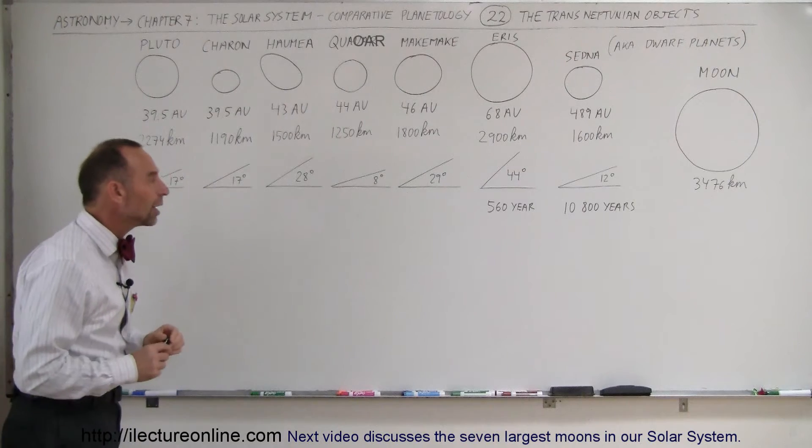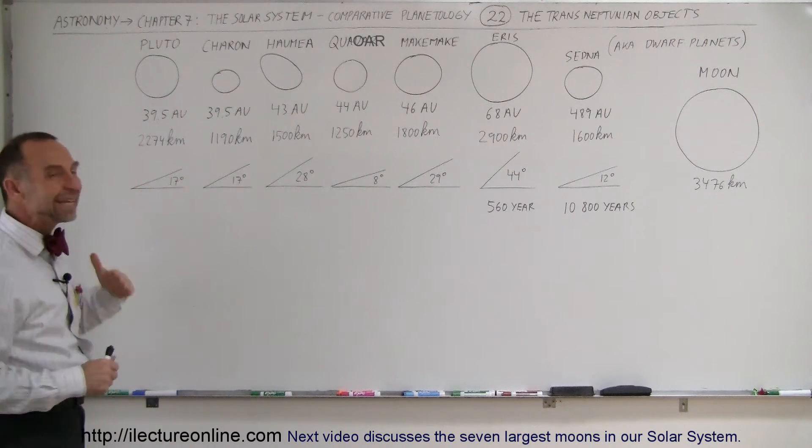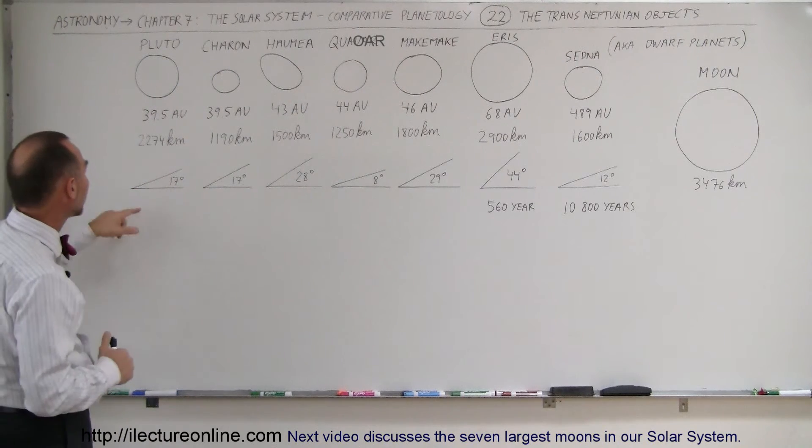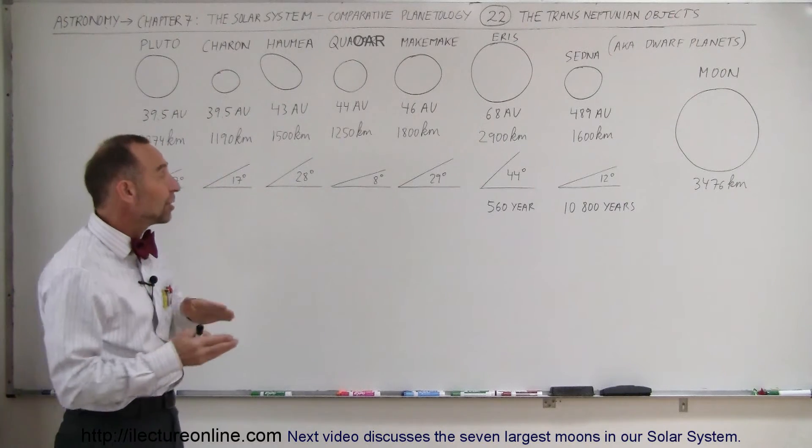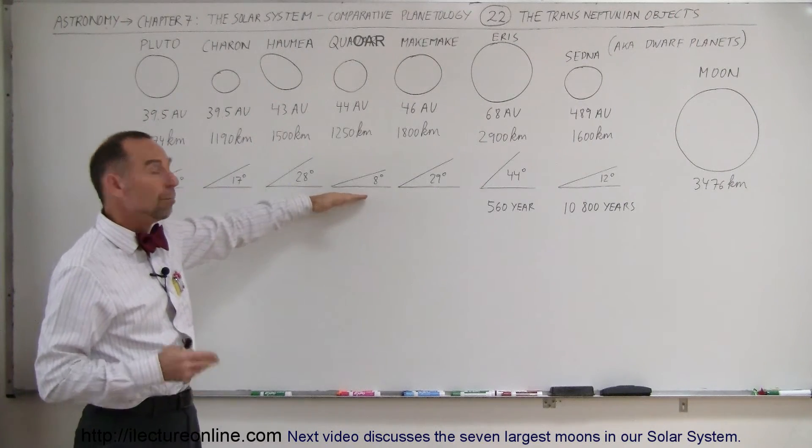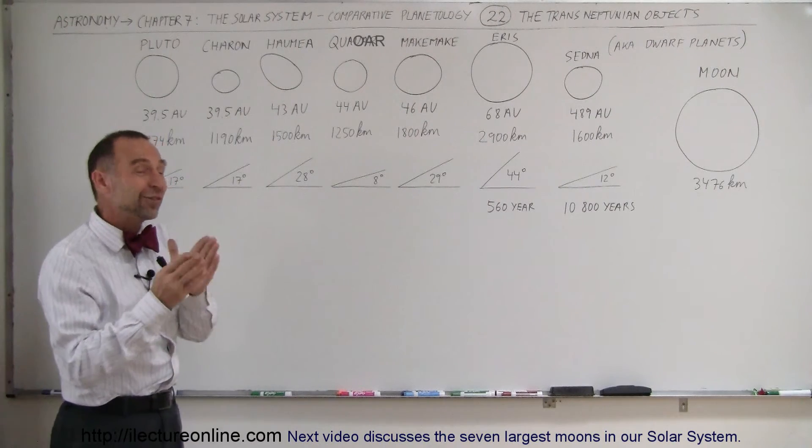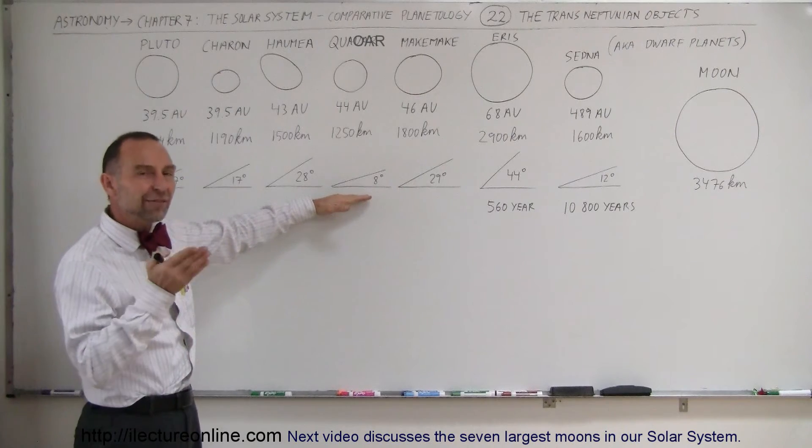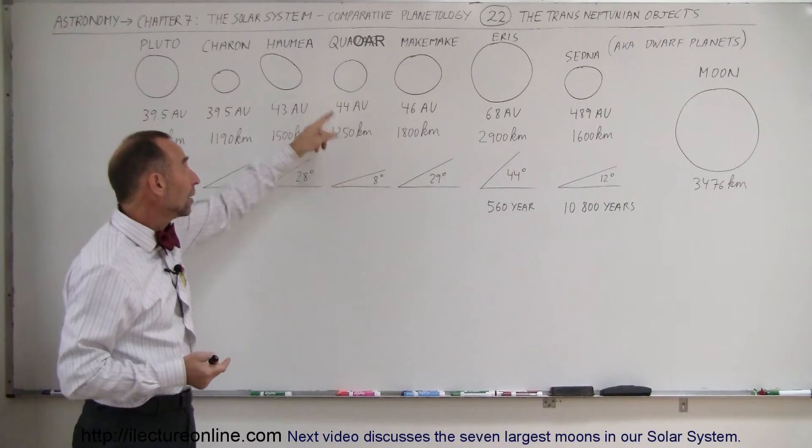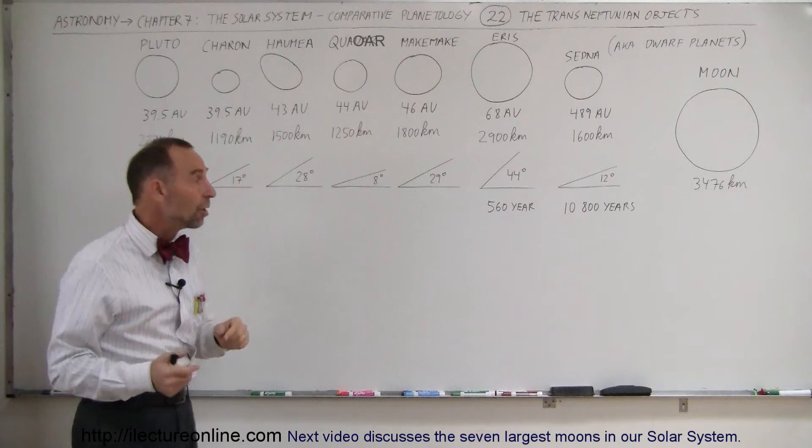Notice what's unique about these as well is if you look at the orbital inclination relative to the ecliptic, notice that all of them have deviations from the ecliptic greater than Mercury, which has the greatest deviation from the ecliptic of all the eight planets. Mercury is about 7 degrees from the ecliptic plane, and Quaoar is 8 degrees. That's the smallest difference.